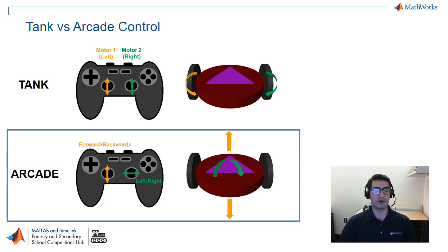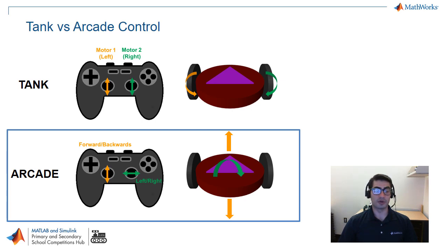Arcade control means you control your robot by moving the body forward and backwards and rotating about the center of the robot. This means we're going to use one joystick's up-and-down motion to move the robot front and back, and a different direction — left and right — to control rotation. We're going to optimize our resources by using both axes of one joystick to control forward/back and rotation with a single joystick.